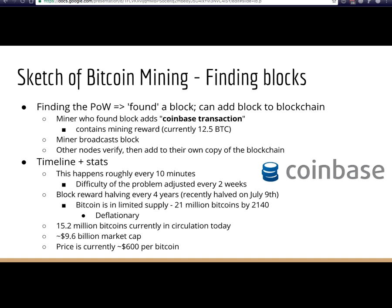The mining reward is currently 12.5 Bitcoin — so every 10 minutes someone gets 12.5 coins. The block reward halves every two years; it halved most recently in July. This eventually tapers to a total of 21 million Bitcoins, making Bitcoin a deflationary currency. Currently about 15.2 million Bitcoins are in circulation, with a $9.6 billion market cap and a price of around $600 per Bitcoin.